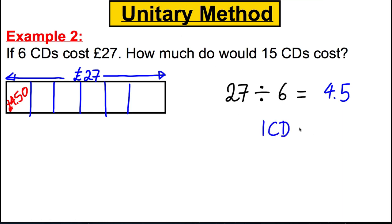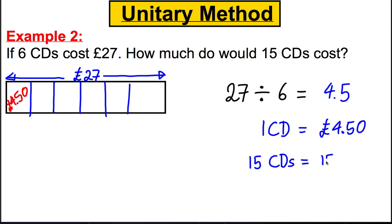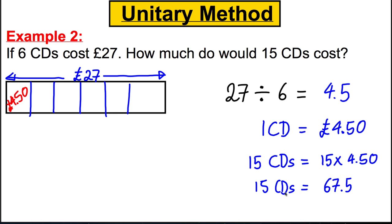So in one box goes 4.5, or £4.50 — that's how we'd write it. We therefore know that 1 CD costs £4.50. The question is what do 15 CDs cost? It's £4.50 multiplied by 15. Type 15 times 4.5 into your calculator and you get 67.5, which translates back to pounds as £67.50.